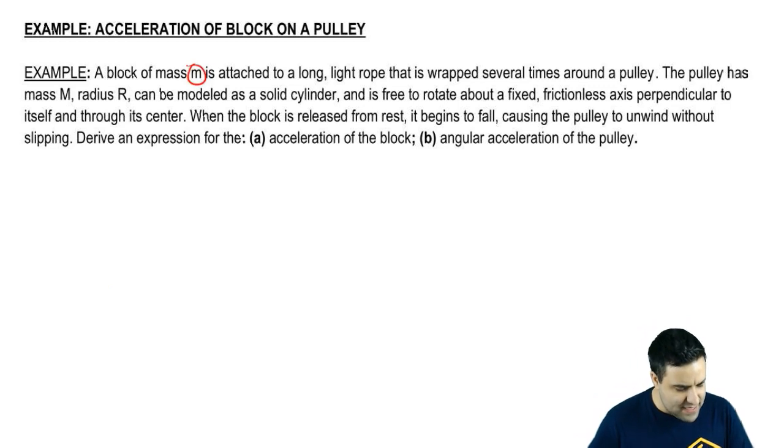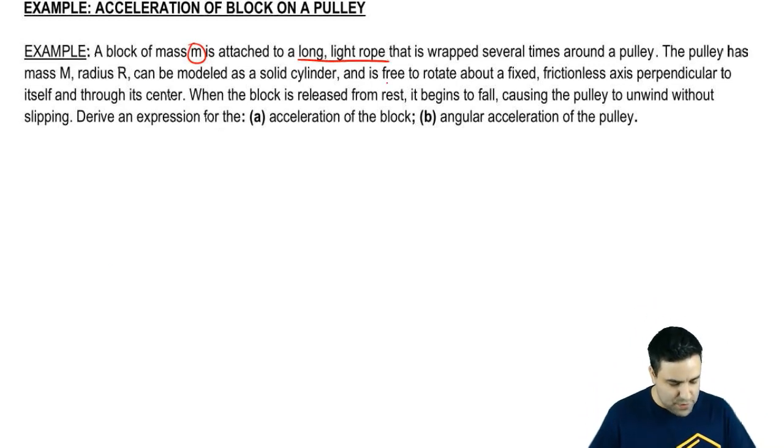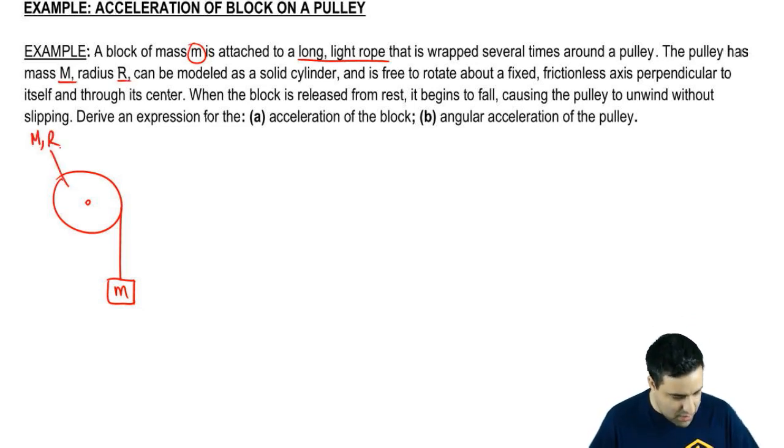We have a block of mass m attached to a long light rope that's wrapped several times around a pulley. Let me draw the pulley, something like this, and you have a rope and a block of mass m. The pulley has mass big M and radius R.